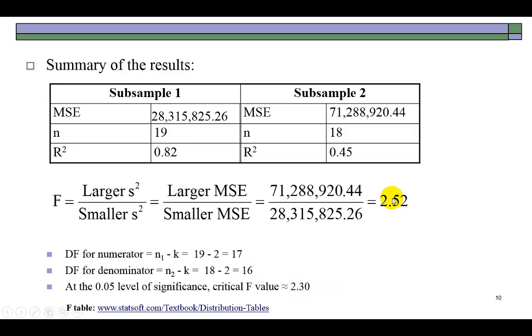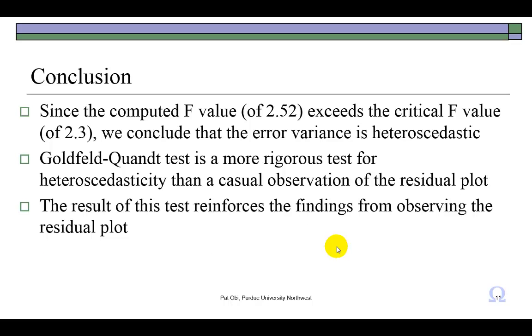So, as you can see, our calculated F statistic exceeds the critical value of F, which would cause us to reject the null hypothesis of no heteroscedasticity in favor of the alternative hypothesis of heteroscedasticity being present in the data set. And these are summarized right here in my conclusions. And as you can see, this Goldfeld-Quandt test reinforces the findings we made when we looked at the residual plot.